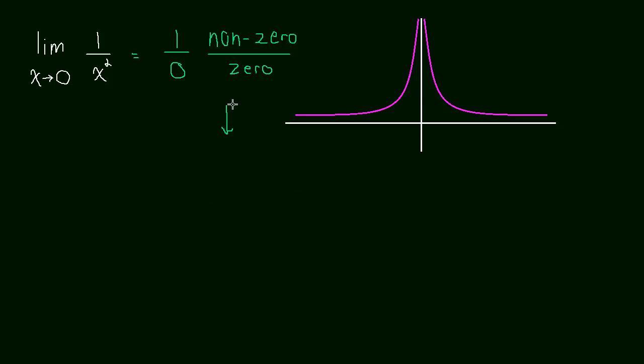So does this function, though, even though there's a vertical asymptote, does it have a limit?